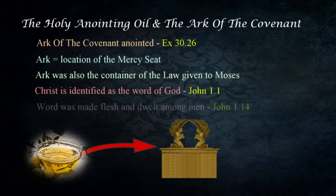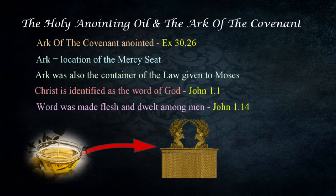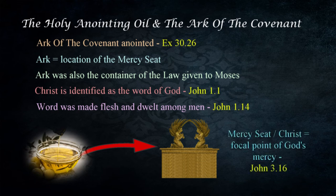John identifies Christ as the Word of God in John 1:1 and emphasizes how the Word was made flesh to dwell among men in John 1:14. Christ came into the world to deliver the message of salvation and reconciliation with God — he is the central point at which one is saved through faith and obedience. The mercy seat atop the ark was the focal point of God's mercy, and Christ today represents the focal point of God's mercy extended to all who will accept it in John 3:16. Christ, like the ark, was the one chosen and anointed by God.